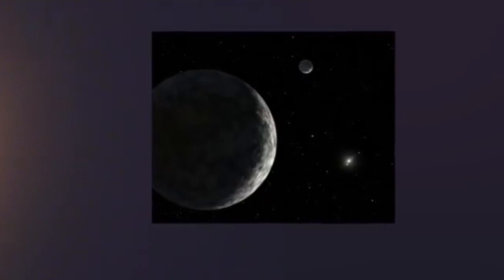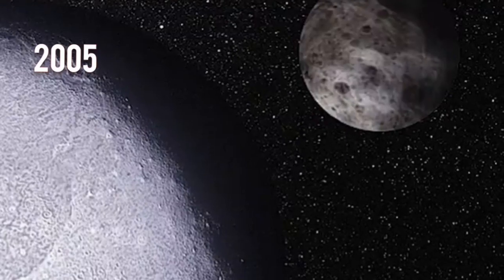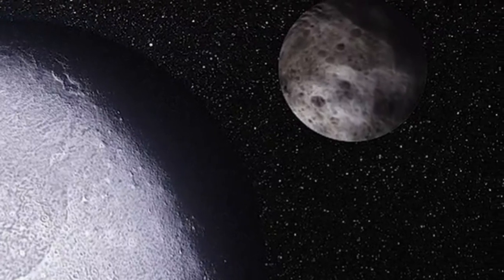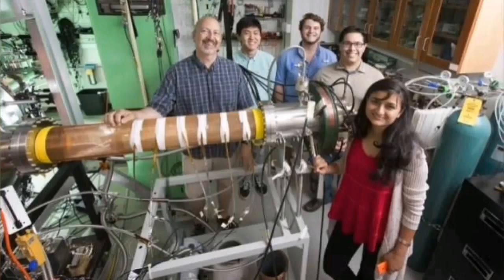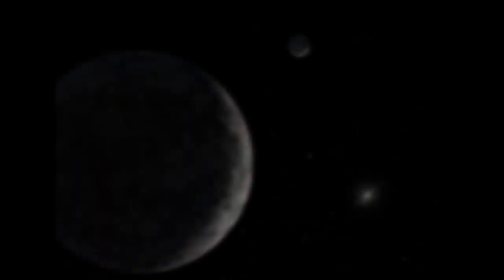But then in 2005, a new object was discovered, which looked like Pluto, but is a little farther from Pluto and is a little bit bigger than Pluto. It was discovered by a team of astronomers with their leader, Mike Brown. Then they called it Eris.